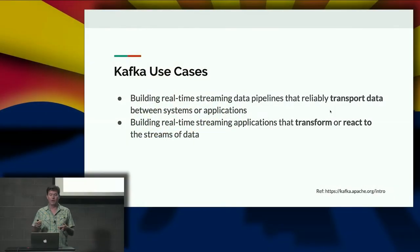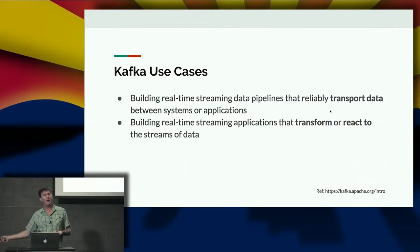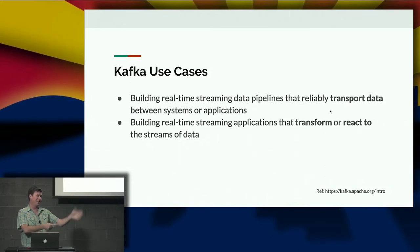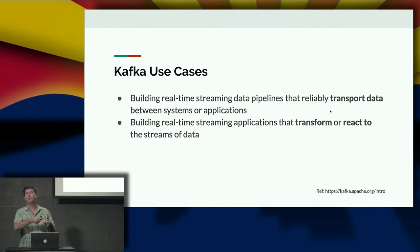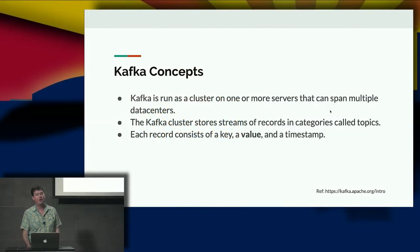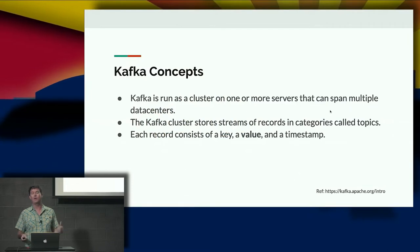Use cases for Kafka: you can build real-time streaming data pipelines that transport data between systems. You can build streaming applications that take data in the stream and modify it — enrich it, remove fields, remove records. Or you can build applications that react to streams of data: look for specific records matching some criteria and react to them — send an email, a tweet, or something. Kafka is run as a cluster of one or more servers that can span multiple data centers, and it stores streams of records in categories called topics.